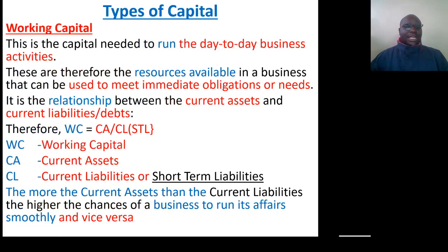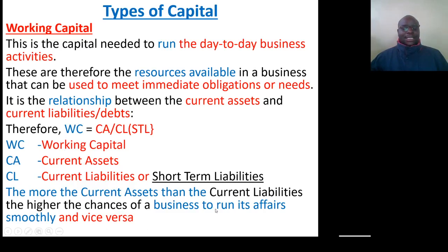We move to working capital. This is the capital needed to run the day-to-day business activities — the resources available in a business that can be used to meet immediate obligations or needs. It is the relationship between current assets and current liabilities. The more current assets exceed current liabilities, the higher the chances of a business running its affairs smoothly. If current assets are less than current liabilities, the business may collapse.